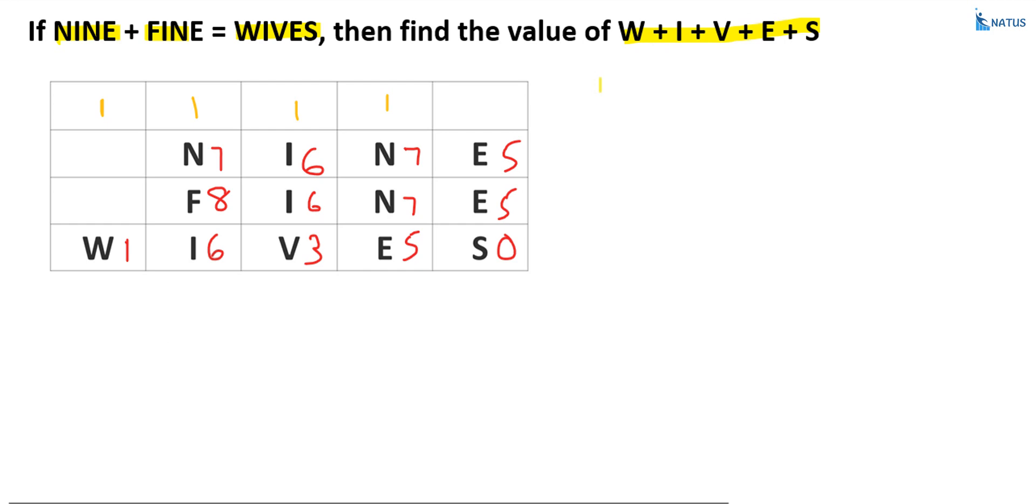Now, what is the question? Sum of wives. W equal to 1, I equal to 6, V equal to 3, E equal to 5, and S equal to 0. And what is the sum of these values? 1 plus 6 plus 3 plus 5, that is equal to 15. So the sum of wives is equal to 15.